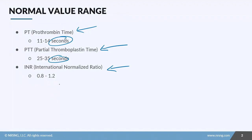INR is not measured in time but is a ratio. They take the PT number and plug it into a formula, which produces the INR value. The normal value for INR is 0.8 to 1.2.